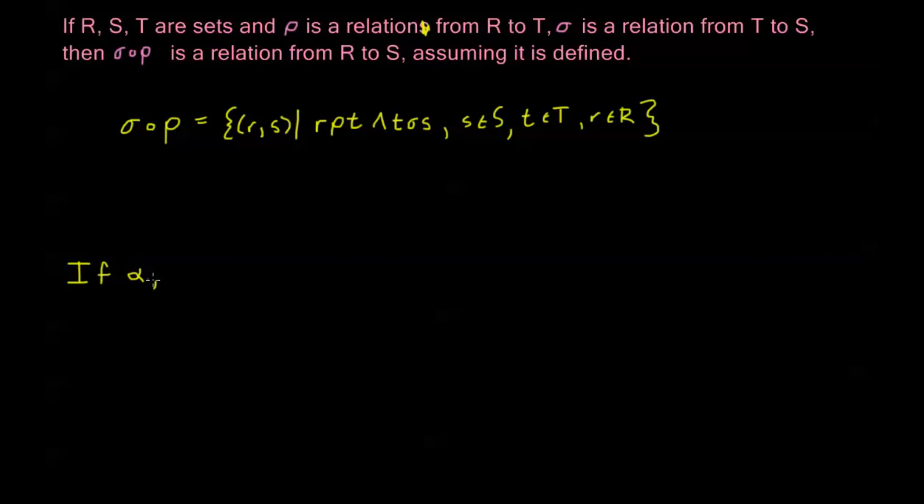So if α, β, and γ are relations, then α composed with the relation β composed with γ is equal to the relation α composed with β, and that whole relation composed with γ. Now this is, of course, assuming that one of these compositions exists, but if one of these compositions exists, then they both exist and they are the same relation.